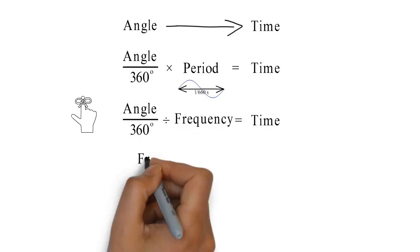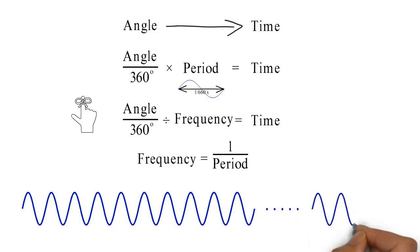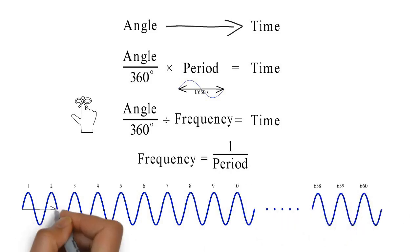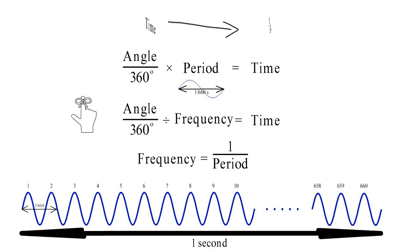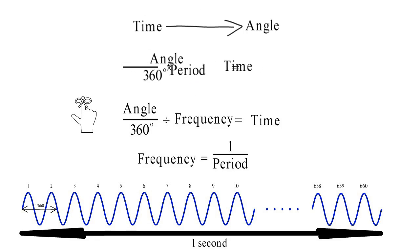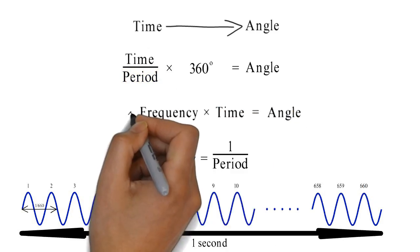So to convert from the angular variable of a sine wave to the time variable of our signal, we divide the angle by the 360 degrees in a circle and multiply by the period of our signal — in this case 1/660th of a second. But remember that multiplying by the period of a signal is the same as dividing by its frequency. After all, what is frequency? It's the number of signal cycles per second — 660 hertz means 660 complete sine wave cycles per second. What if we wanted to go the other way and convert from the time variable of our signal to the angular variable of a sine wave? In that case, we divide by the period of our signal and multiply by 360 degrees. Alternatively, because this time we divided by the period, we could just simply multiply by the frequency instead. So to convert from time to angle, we multiply by the frequency and then by 360 degrees.